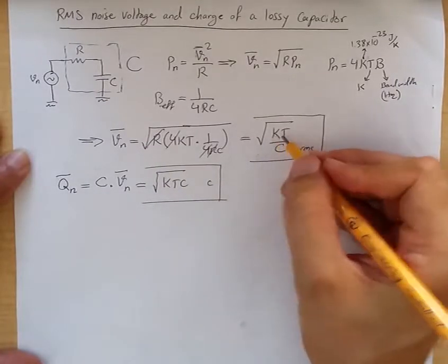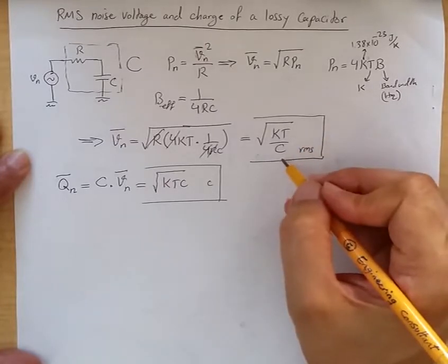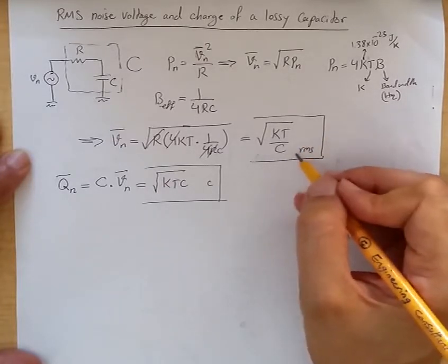Replacing with K Boltzmann constant, T room temperature, and C, for a given capacitor we can come up with a value.